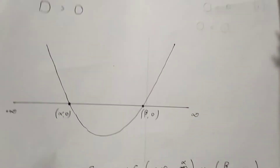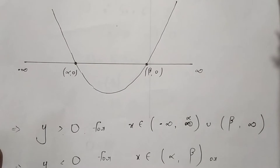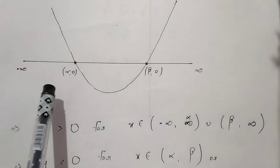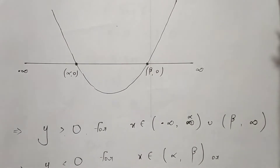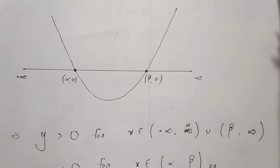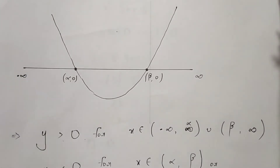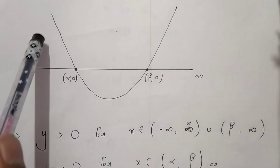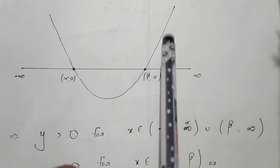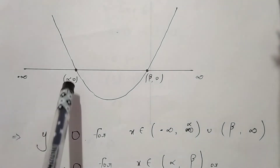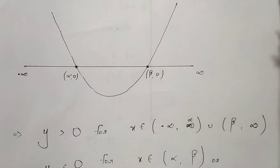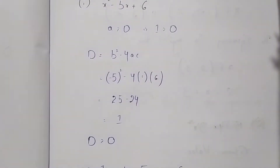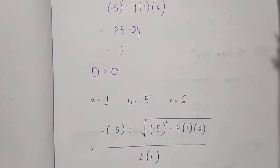Since a is greater than 0 and the discriminant is also greater than 0, we get the graph of that expression like this. Alpha and beta are the roots. The expression will be positive if the values of x lie in the outer regions and negative if the values of x lie in the region between alpha and beta. Now let us find the values of alpha and beta.